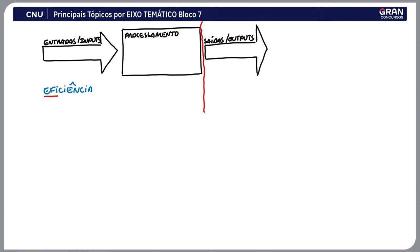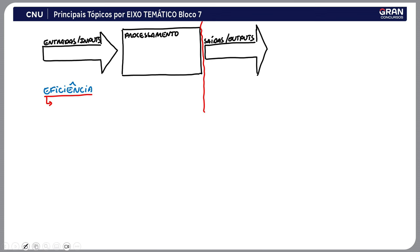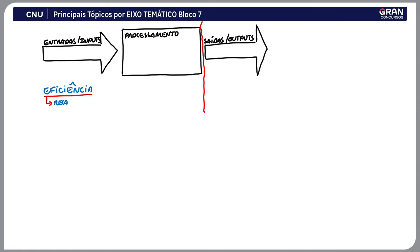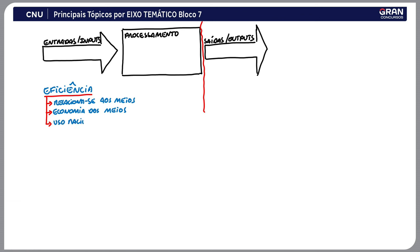A eficiência relaciona-se aos meios. É a economia dos meios. Eficiência envolve o uso racional e econômico dos recursos. Se você utiliza os recursos disponíveis de modo racional e econômico, você é eficiente. Se não faz isso, é ineficiente. A eficiência está associada a fazer da forma mais econômica possível — pode ser pensada como o melhor caminho para fazer.